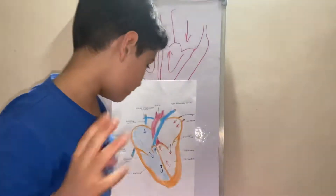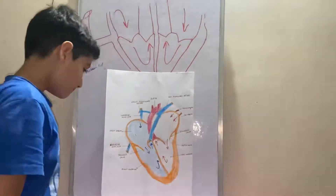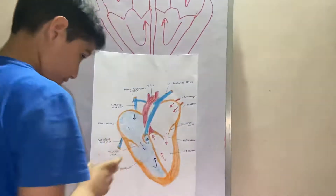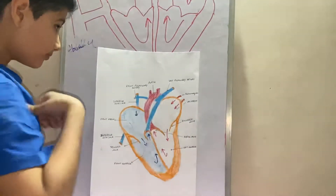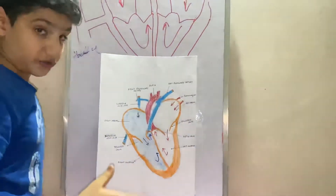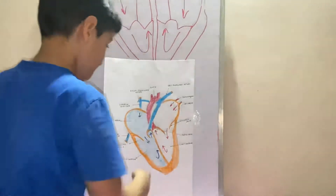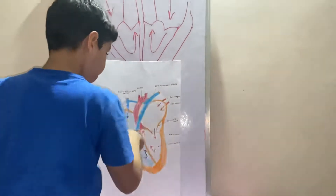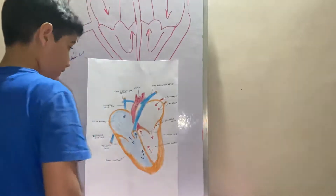The tricuspid valve has three cusps and it opens and closes. Then the blood goes into the right ventricle. From the right ventricle, it contracts and ejects into the pulmonary artery.